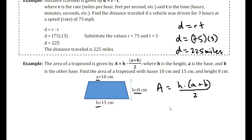So the height is 8, a is 10, b is 15, divided by 2. So that gives us 8 times 25 over 2. The 8 and the 2 cancel, giving us 4 times 25, which is 100 centimeters squared.